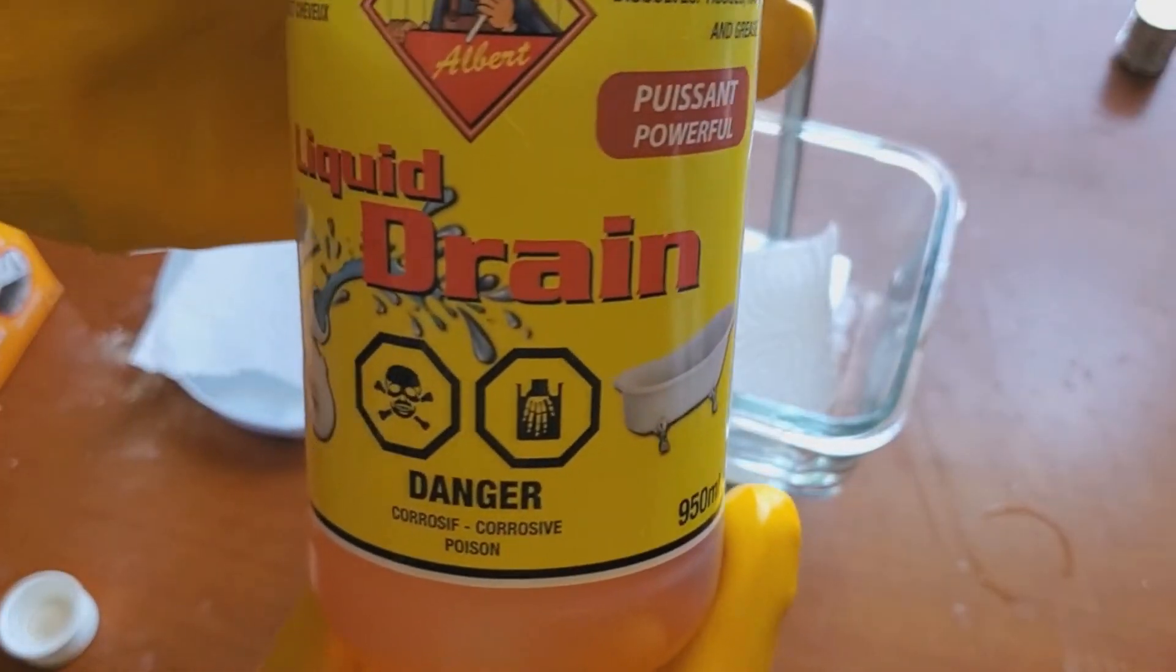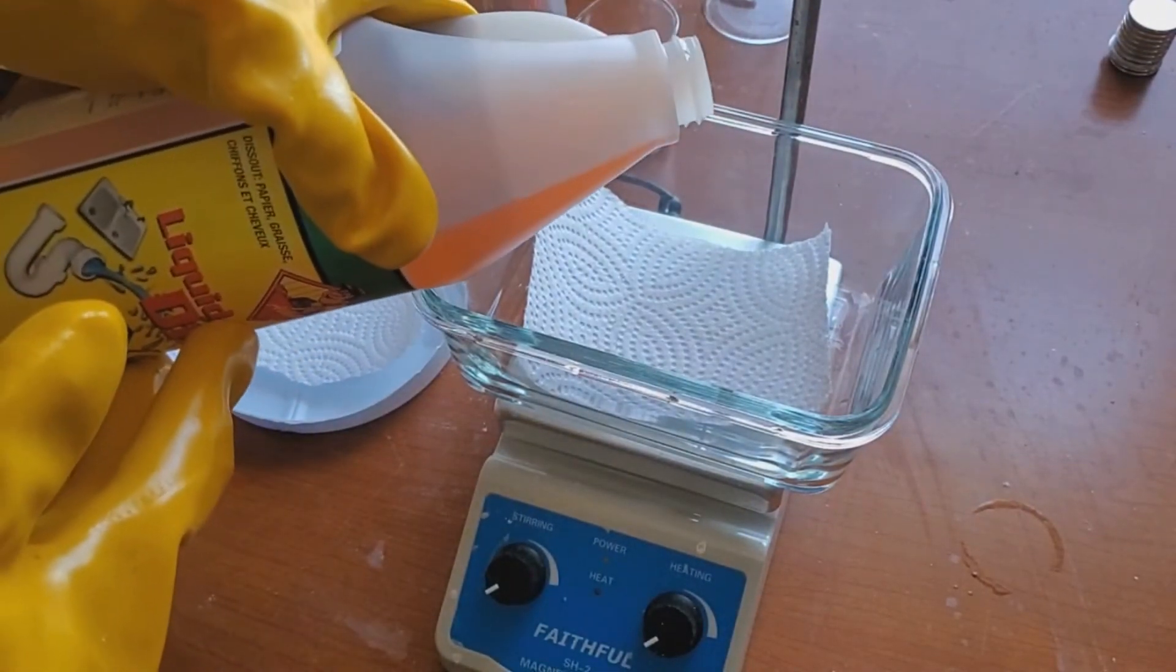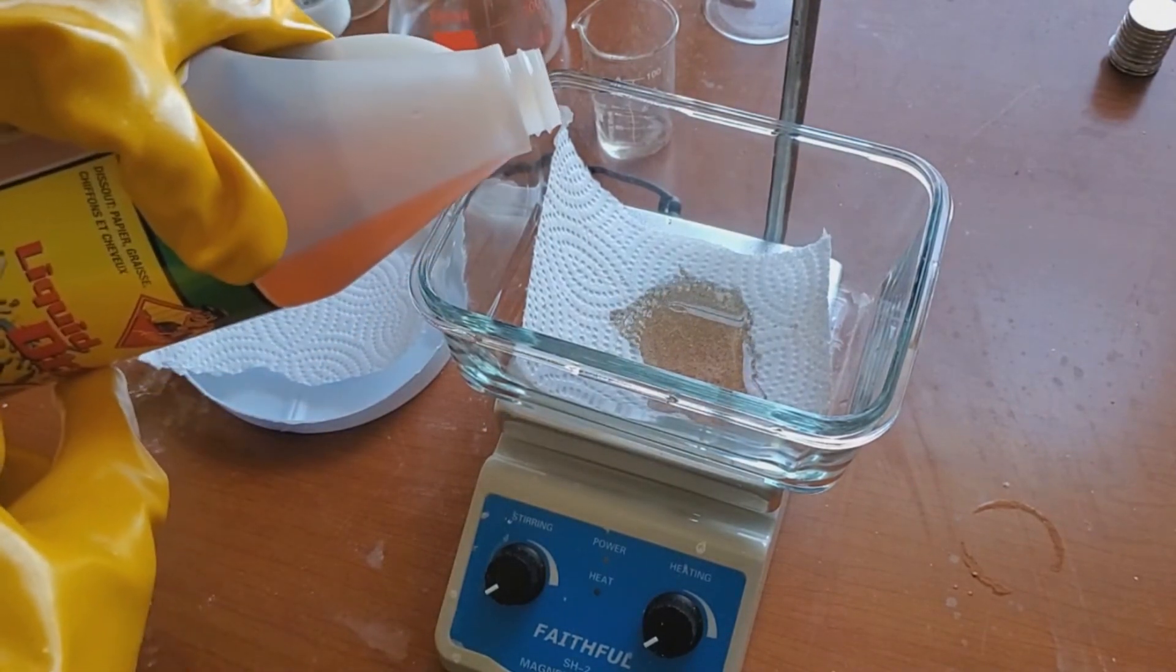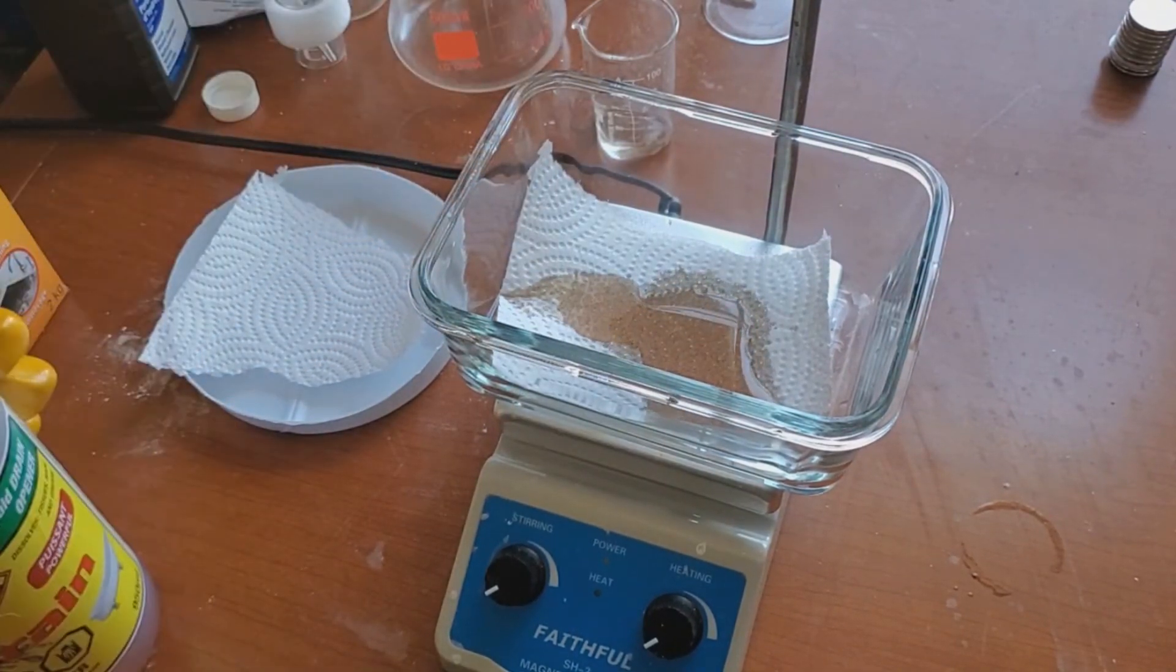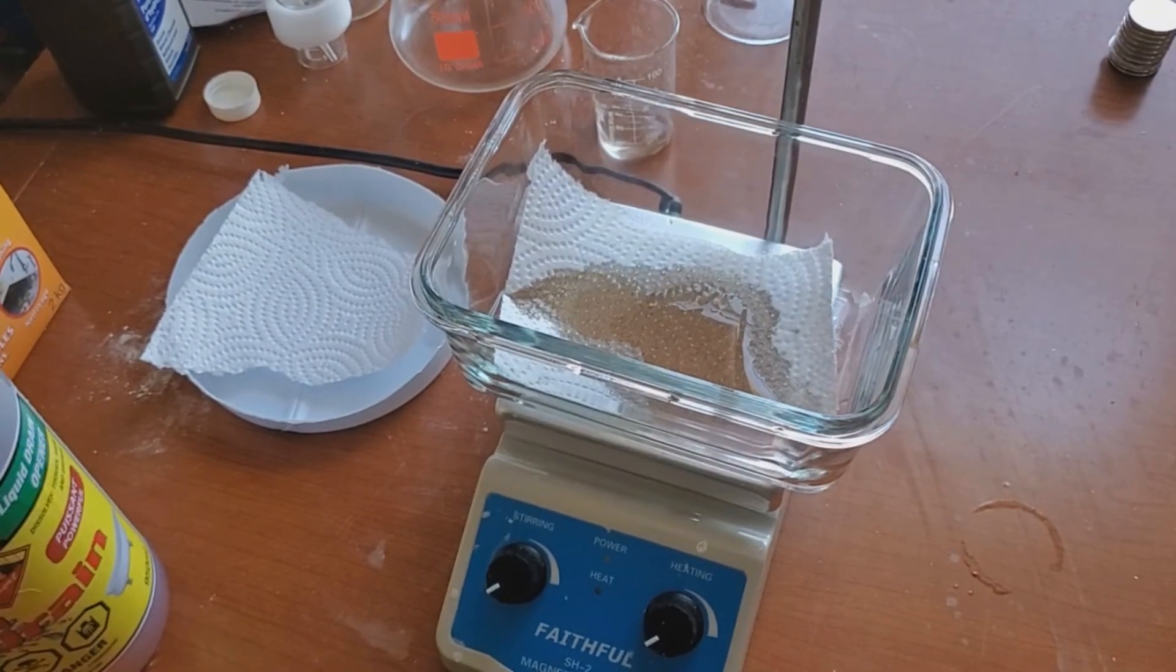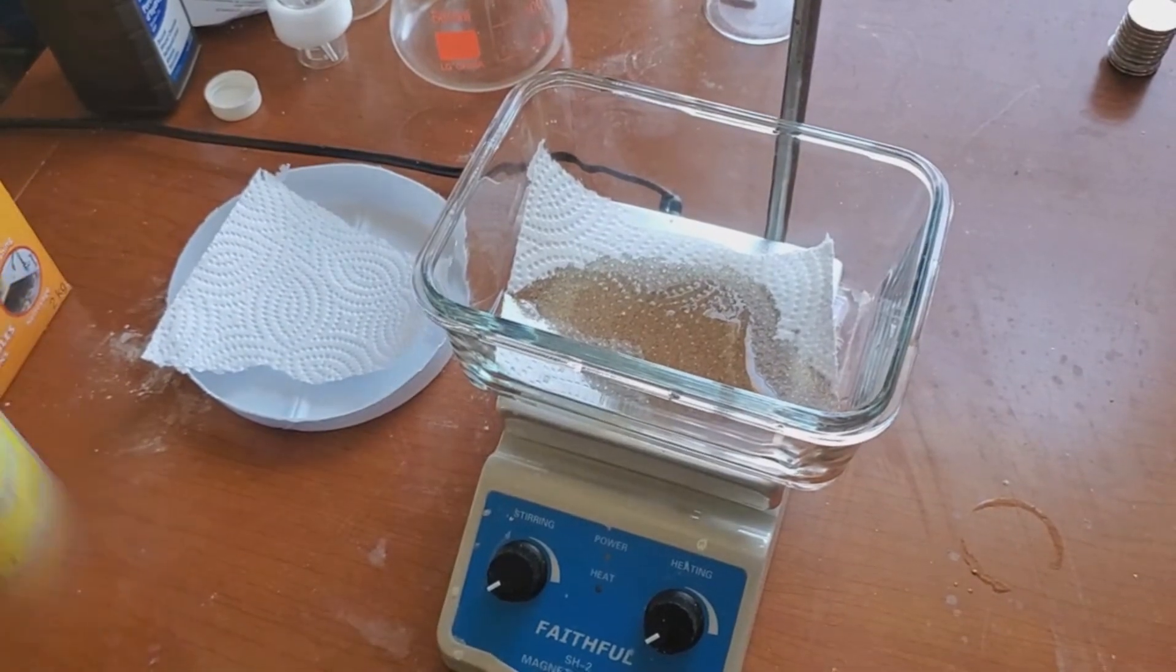We are going to show the difference between the drain cleaner we started with and the Caro's acid we end up creating. I started with the drain cleaner just to give it a little bit more time to react with the organic. And on the left, I cut the bottom of a bottle of bleach and gave it a good cleaning. Bleach bottles are made from polyethylene plastic and can withstand concentrated acids, even concentrated sulfuric acid.